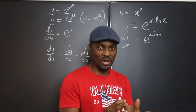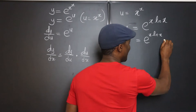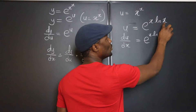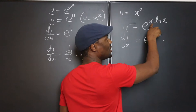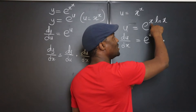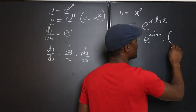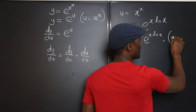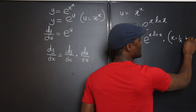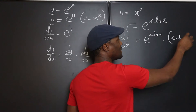It's easy — the product rule. Remember two functions multiplying each other? That's where we are. If you apply the product rule to x ln x, you keep the first and differentiate the second, then differentiate the first and keep the second. So we multiply: keep the first, differentiate the second, plus differentiate the first, keep the second.